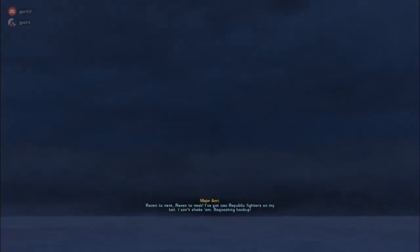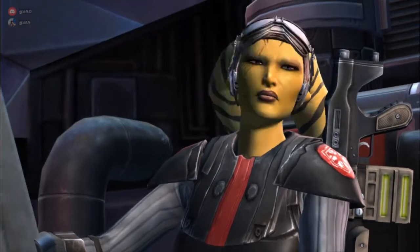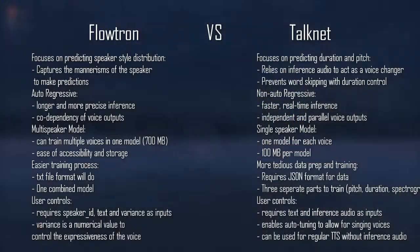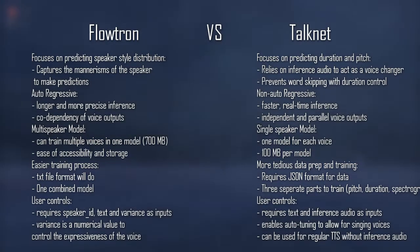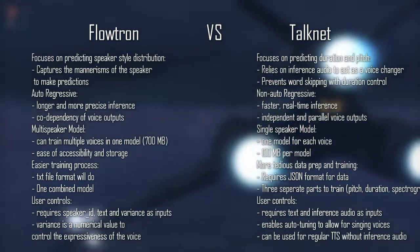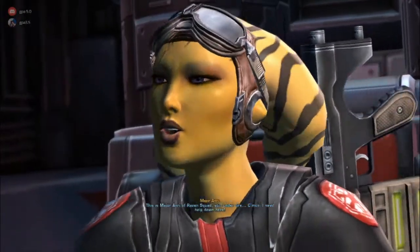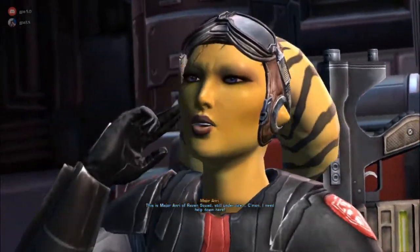The functions of TalkNet are different from Flowtron. Unlike Flowtron, it is a non-regressive flow text-to-speech model, which means that it can produce audio at a much faster pace. Other differences are listed on the screen as shown here. The TalkNet model can be used to map a person's voice onto a given audio file — essentially, it acts as a voice changer.